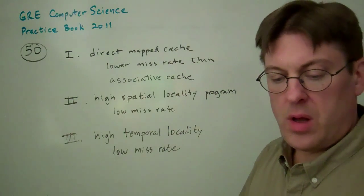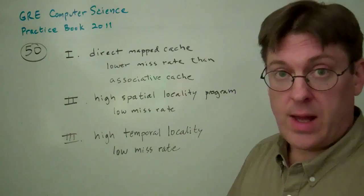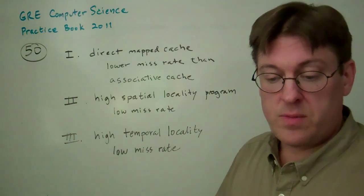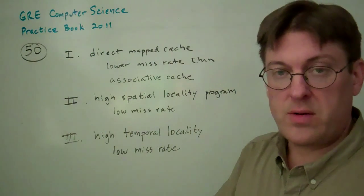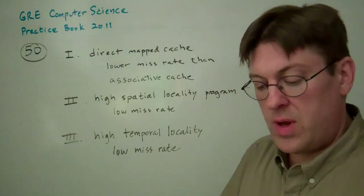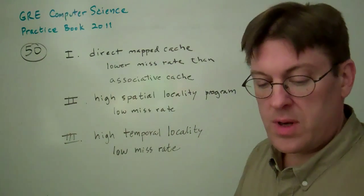2. Programs with high spatial locality have a low cache miss rate, primarily because the exact same addresses are re-referenced. 3. Programs with high temporal locality have a low cache miss rate.